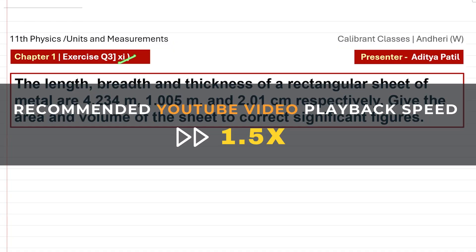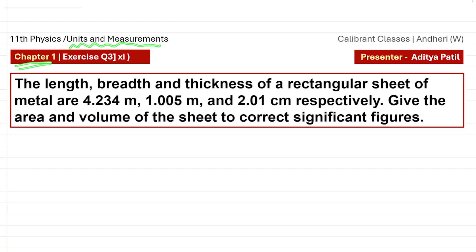In this video we are discussing the 11th numerical from the exercise for the chapter Units and Measurements, which is the first chapter for 11th standard physics. The question gives us three quantities: length, breadth, and thickness of a rectangular sheet. The measurements given are: length is 4.234 meters, breadth is 1.005 meters, and thickness is 2.01 centimeters.